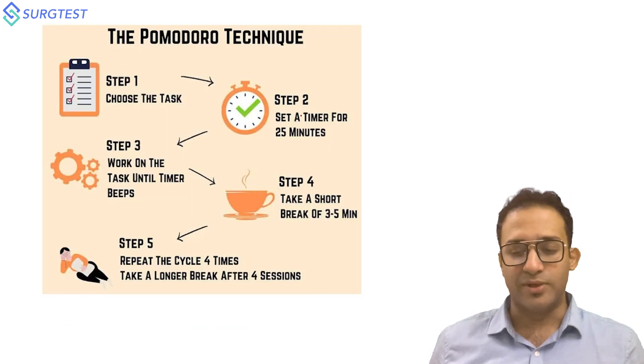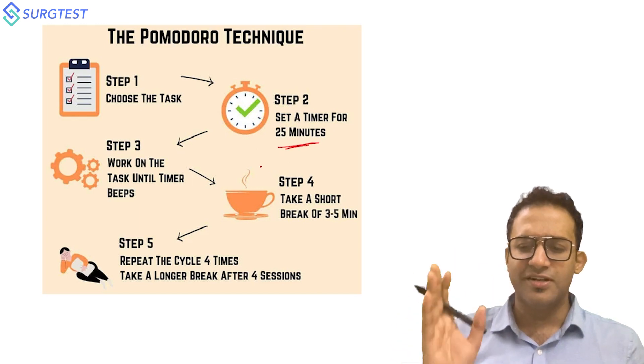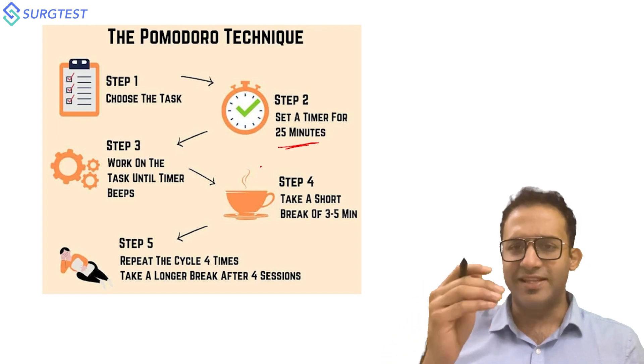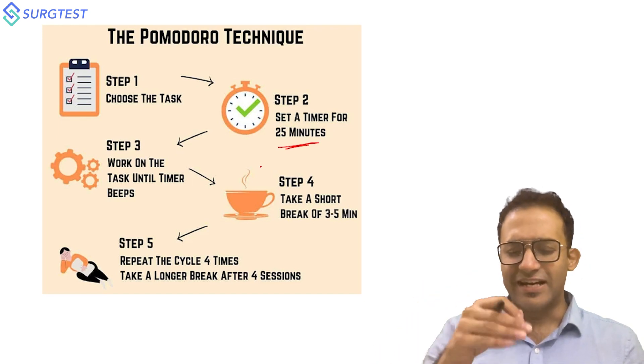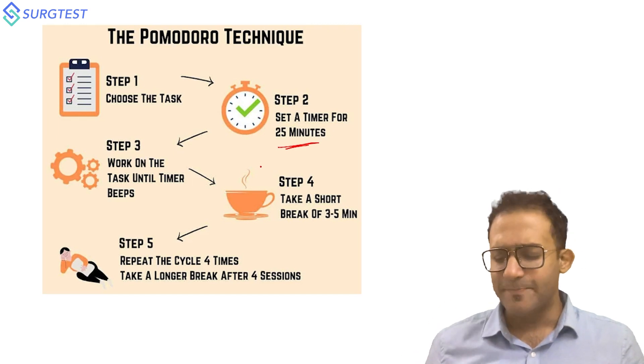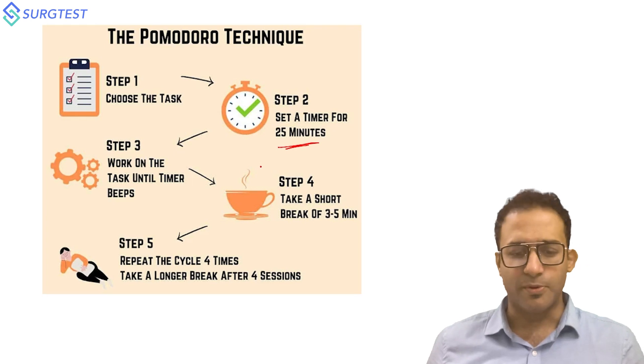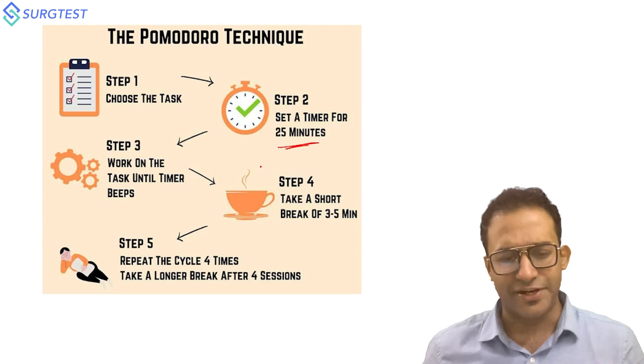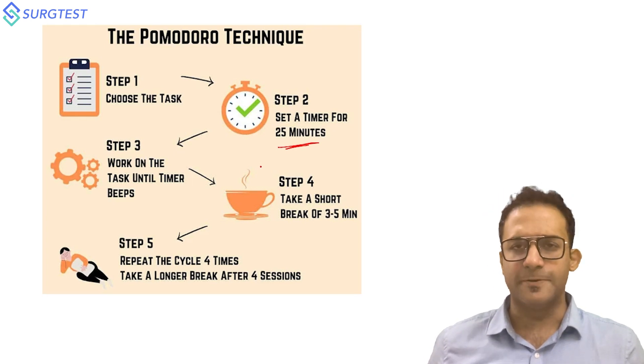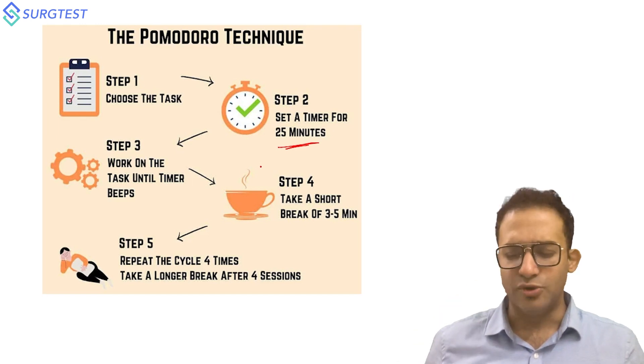One technique which you can use is the Pomodoro technique. Set a timer for 25 minutes, do the task, don't do anything else, complete focus till the timer goes off. Then take a short break for three to five minutes. Repeat the cycle four to five times and take a longer break after four sessions. Time tested technique - there are a lot of videos on YouTube, a lot of articles on the Pomodoro technique. I personally find that it is very useful.